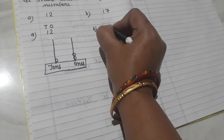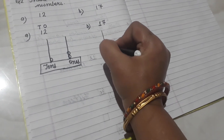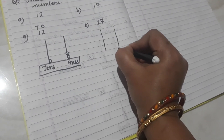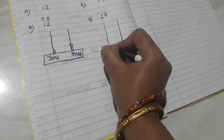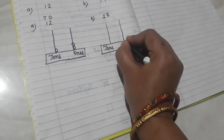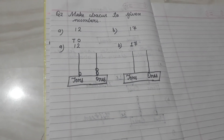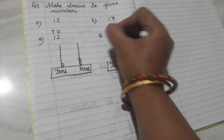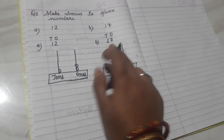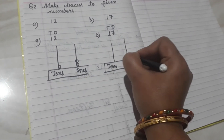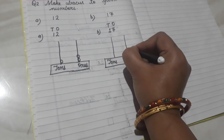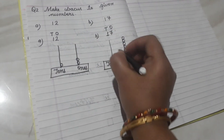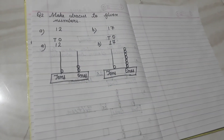B number is one, seven — seventeen. We draw two vertical rods: the right rod for ones place, the left rod for tens place. At the ones place, the digit is seven, so we draw seven beads — one, two, three, four, five, six, seven. At the tens place we draw only one bead. This is our abacus for seventeen.